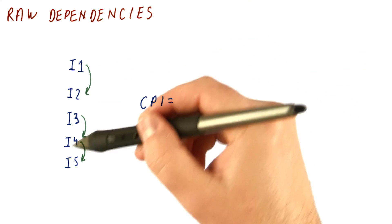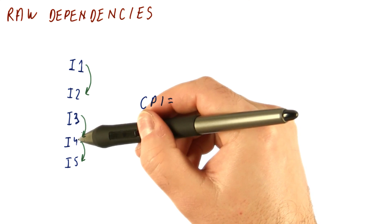The next cycle, I2 can now go, and I4 can also go, because I3 is now done.